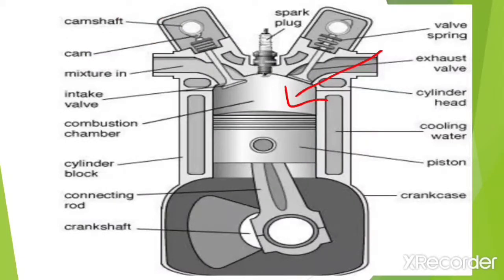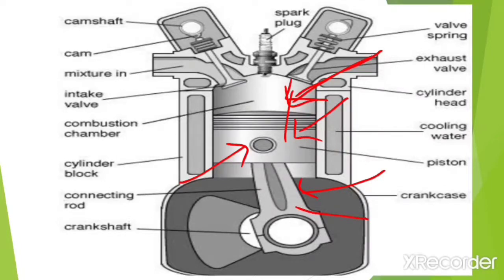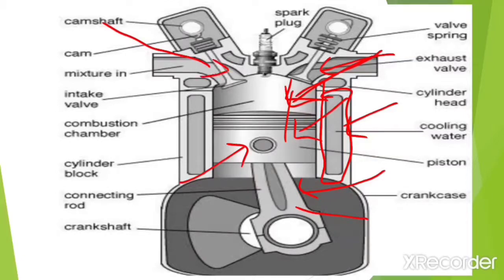This is the diagram of the IC engine. The first component is the cylinder, where the actual combustion of fuel takes place. Then this is the piston, then the connecting rod, and the piston pin, which connects the piston and connecting rod and provides a flexible connection between them. Here is the cooling water in the cooling jacket, which is part of the cooling system. This is the exhaust valve, and this is the inlet valve, through which the mixture of air and fuel — or in the case of a diesel engine, only air — is transferred to the cylinder through the inlet manifold by opening the intake valve.